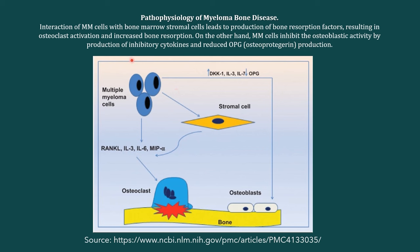On one end, the multiple myeloma cells interact with the bone marrow stromal cells, leading to the production of bone resorption factors such as RANK-L, interleukin-3, interleukin-6, and MIP-alpha. This results in increased osteoclast activation and therefore increased resorption or breakdown of bone. On the other end, the multiple myeloma cells also produce inhibitory cytokines such as DKK-1, interleukin-3, and interleukin-7, and they also decrease osteoprotegerin production. All of this leads to decreased activity of osteoblasts, or bone-forming cells, leading to less bone formation. So there is an increase in bone breakdown and a decrease in bone formation, and because of this imbalance, we see those lytic lesions in the bone.